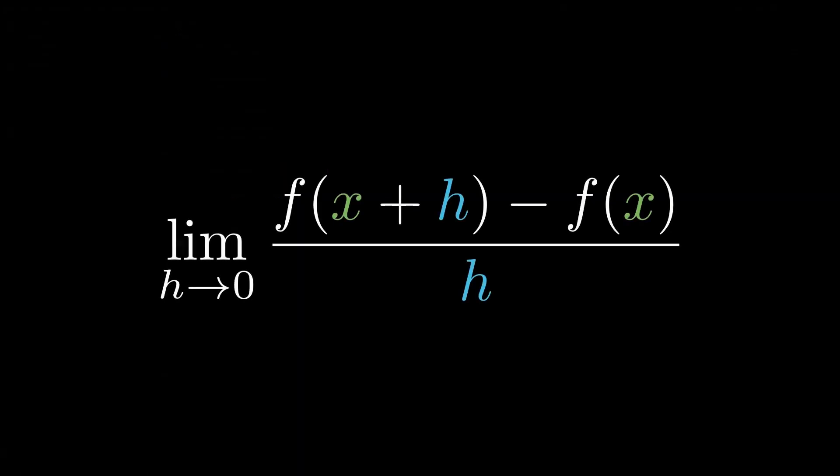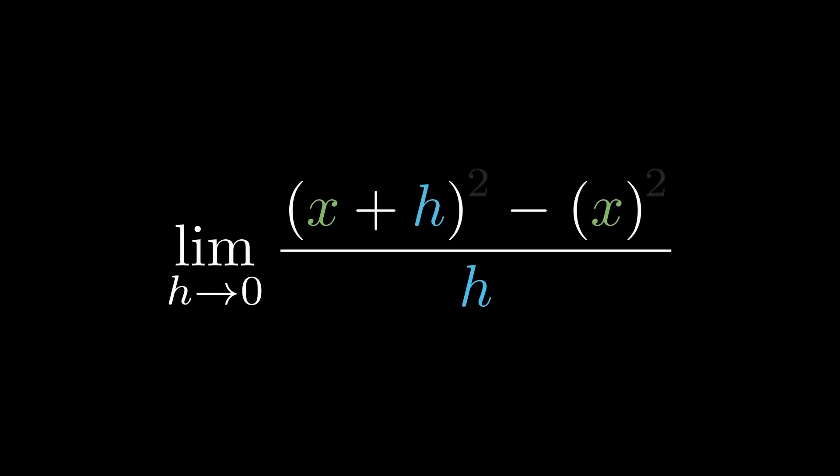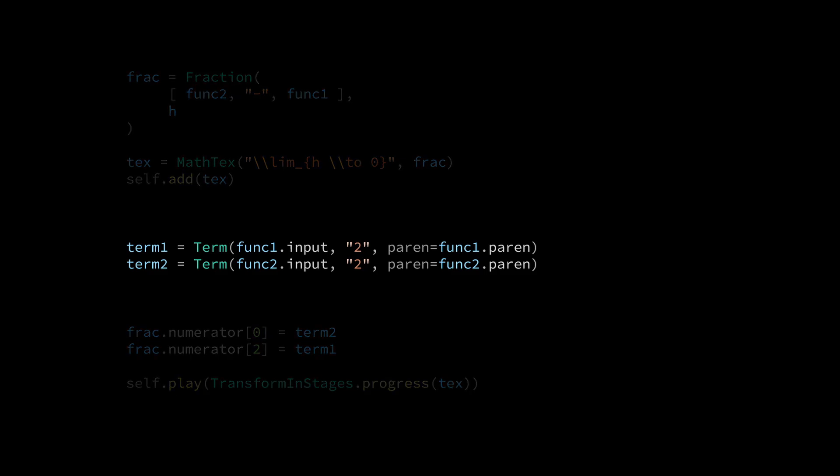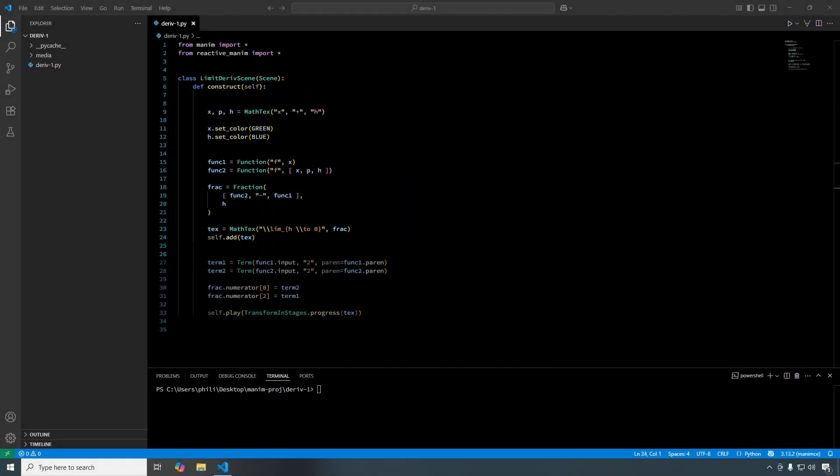We will now add the previous animation in a way that is compatible with the full limit derivative expression. There is no change to the construction of the term components. We construct x squared and x plus h squared as we did before. But the math text we are trying to edit is now inside the numerator of a fraction. So, instead of using text, we will now use frac.numerator to replace the function components with term components. And here is the updated code.